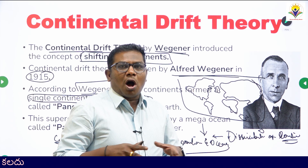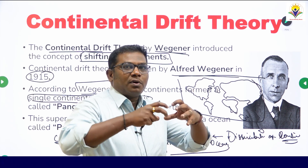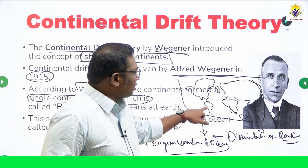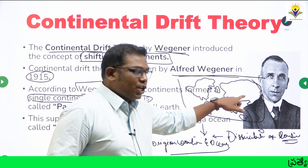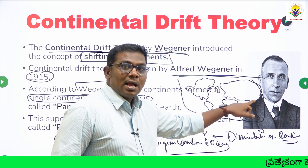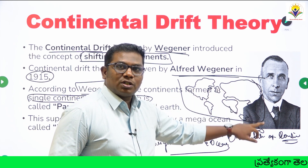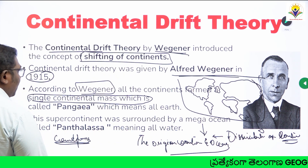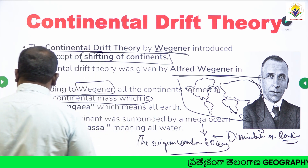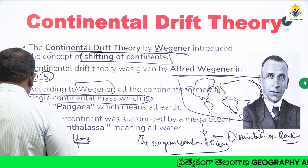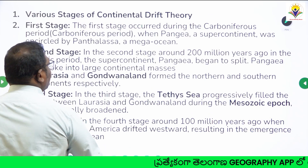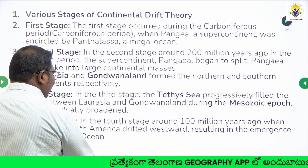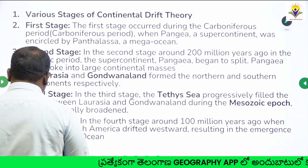Later, this single block was broken down and moved in different directions to form the continents like South America, North America, Eurasia, Africa, and Indo-Australia. That single block of continent is what is called Pangea. Wegener called that landmass Pangea.